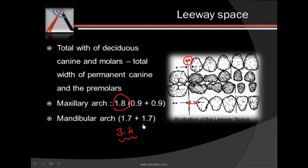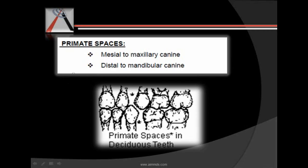Since leeway space is more in the mandibular arch, the permanent mandibular molar gets more space to shift mesially compared to the permanent maxillary first molar, creating a mesial step. Other than leeway spaces, we have primate spaces to discuss. In the maxillary teeth, primate spaces are present mesial to the canine, while in the mandible they are present distal to the canine. These spaces are also used for the mesial shift of the permanent molars.